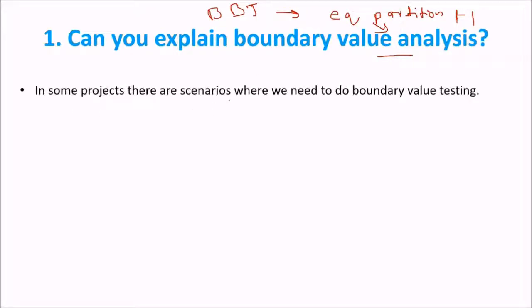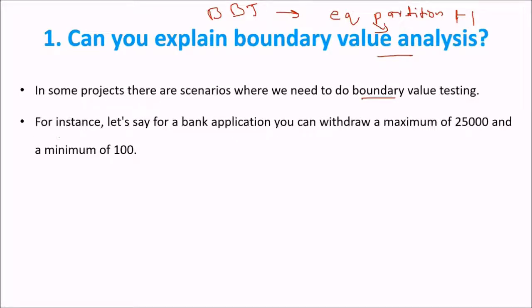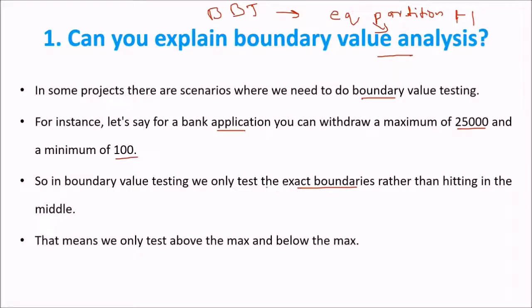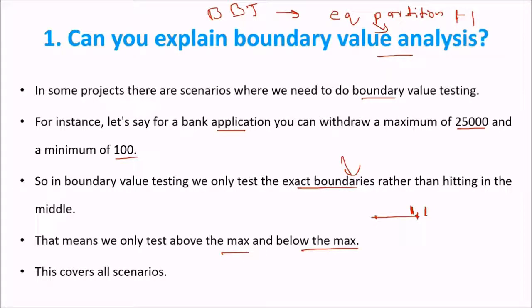In some projects there are scenarios where we need to do boundary testing. For instance, for a bank application you may withdraw a maximum of 25k and a minimum of 100. In boundary value testing we only test the exact boundaries rather than hitting the middle, because most errors occur at the boundaries. This means we test just below the maximum, at the maximum, and just above the maximum, which covers all the scenarios.